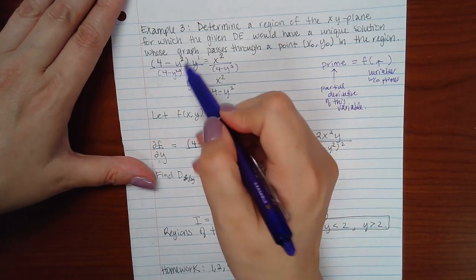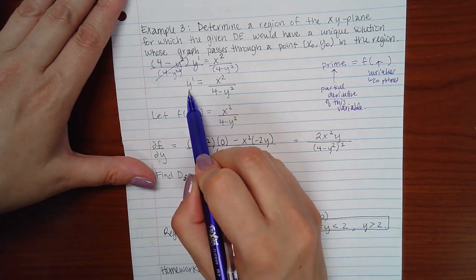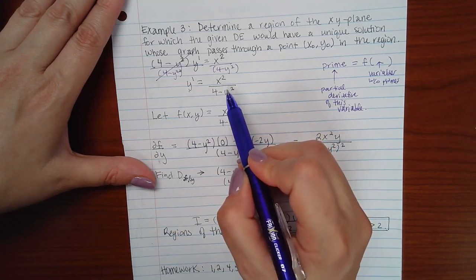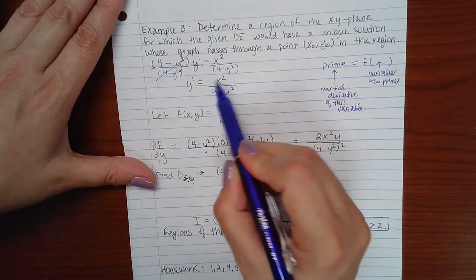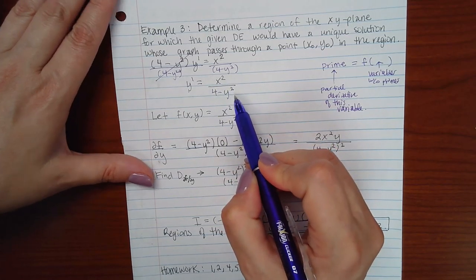And if I did that, this would cancel and I'd have y prime by itself. And on this side, there's really no need, no coefficient, and no exponent in the denominator. So I don't need the parentheses in the denominator.